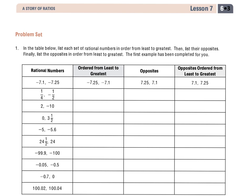So for number 1 it says, fill in the table below. List each set of rational numbers in order from least to greatest, then list their opposites. Finally, list the opposites in order from least to greatest.